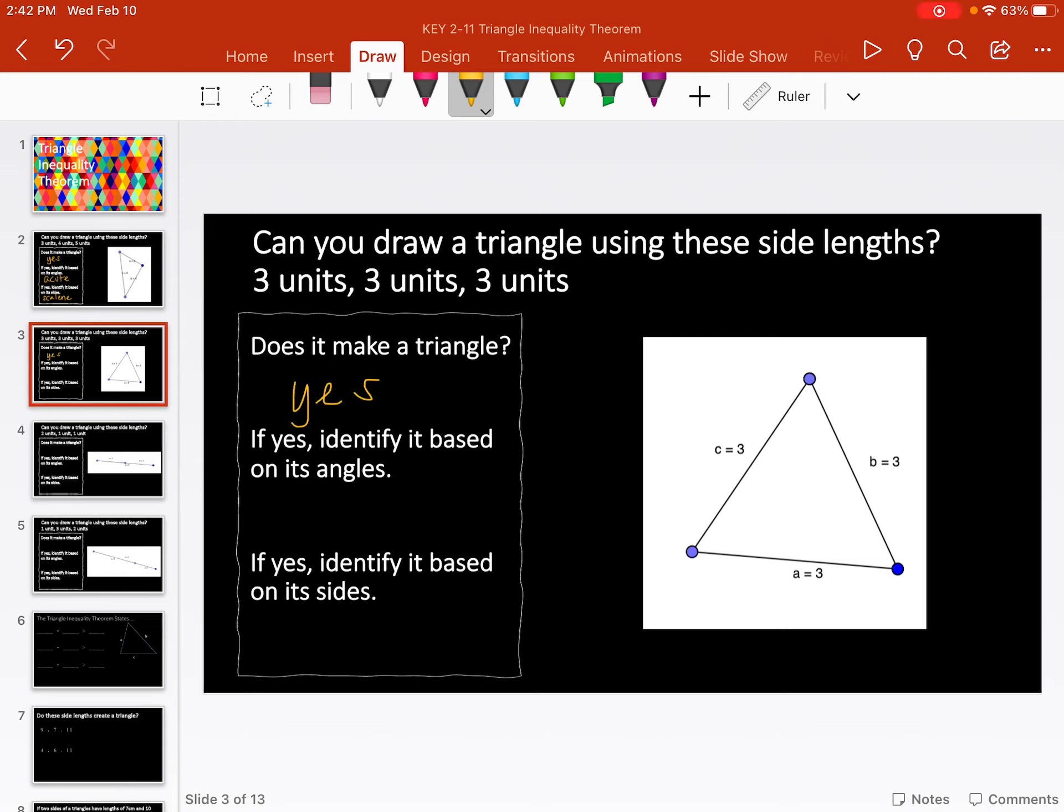Let's identify it by its angles and by its sides. The angles are acute. And our three side lengths are all the same. So this is an equilateral triangle. All three side lengths are the same makes it equilateral.